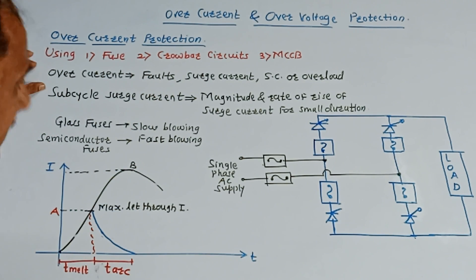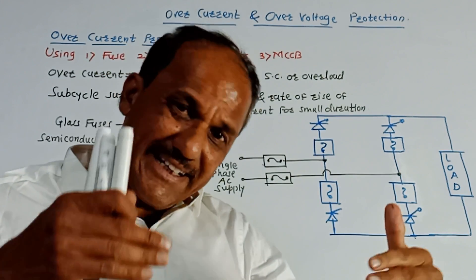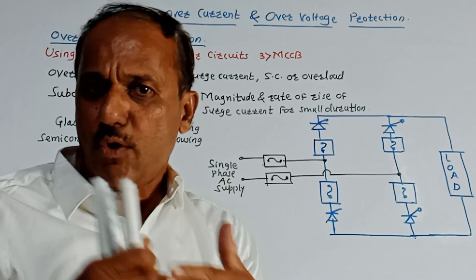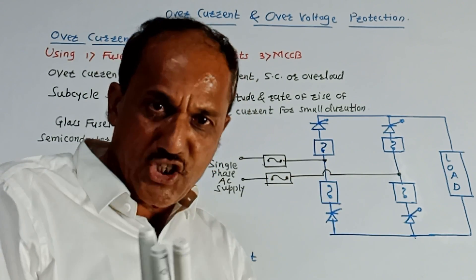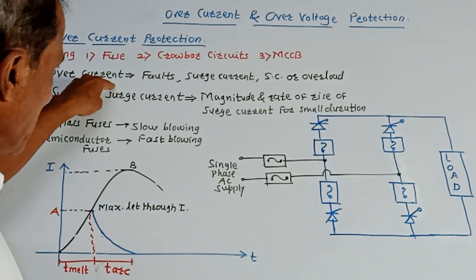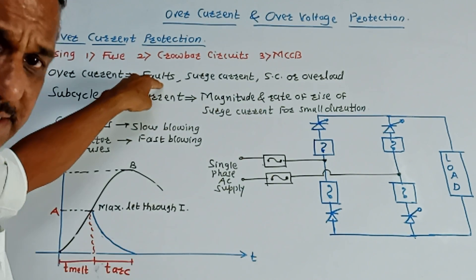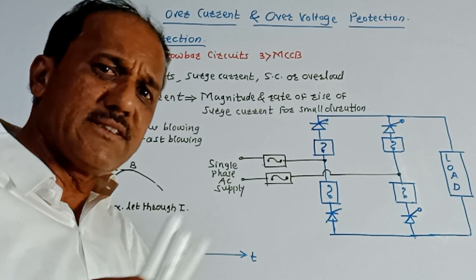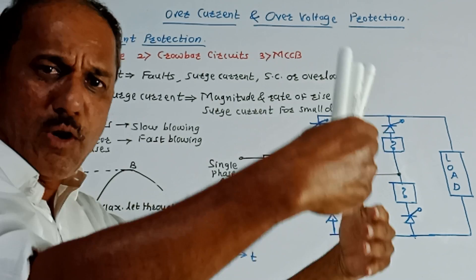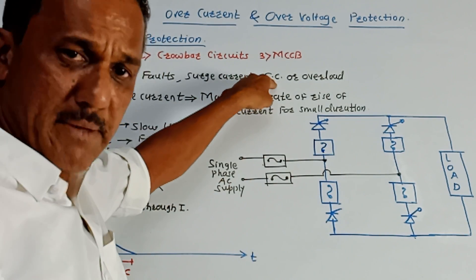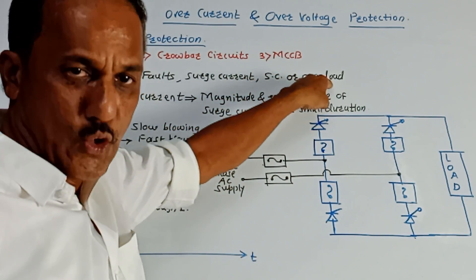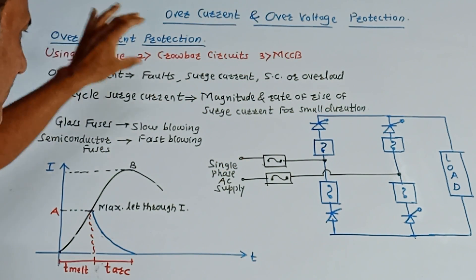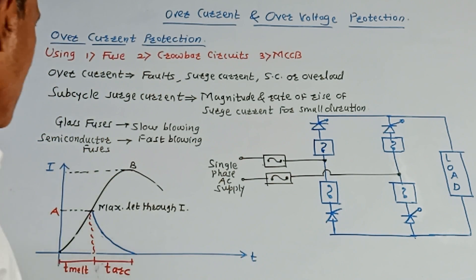What are the causes of overcurrent? Overcurrent is the current that is exceeding beyond a certain limit and it may damage the power device. Like if you are using SCR, it may damage the SCR. Overcurrent is produced due to certain reasons like there may be faults in the circuit, or surge current may flow. Surge current means suddenly a certain maximum amount of current starts flowing through the circuit, or there may be short circuit or overload. In all such cases, there can be a flow of overcurrent in the circuit which may damage the power device.